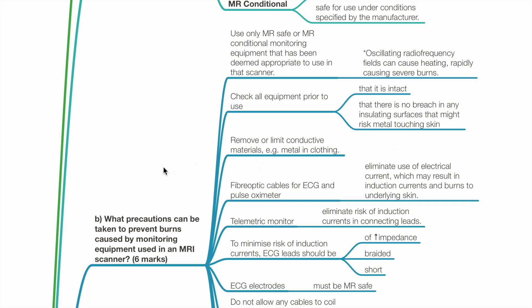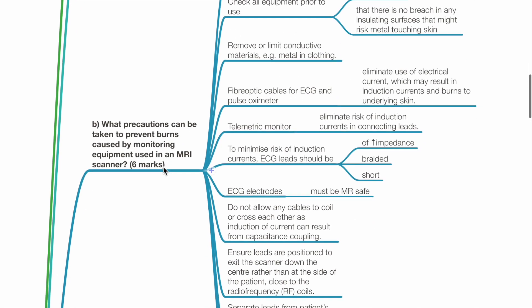Use fibre optic cables for ECG and pulse oximeter. This eliminates use of electrical current, which may result in induction currents and burn the underlying skin. Telemetric monitoring eliminates the risk of induction currents in connecting leads.